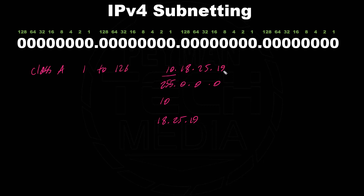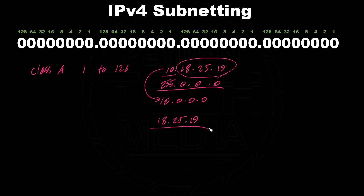For this IP address, the network address would be 10.0.0.0. This IP address belongs to this network based on the default subnet mask, and 18.25.19 is the host information. This is the decimal notation; the prefix notation would be /8, also called the CIDR — Classless Inter-Domain Routing — notation. So this is the classful default subnet mask /8 for Class A.